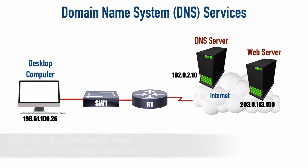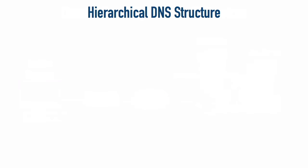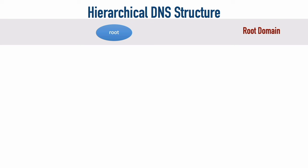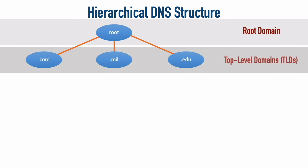The worldwide DNS structure is hierarchical. We start at the root. There is a root domain, and there are roughly 12 different companies around the world that handle pointing us to DNS servers that know how to get us to .com addresses, .mil addresses, and so on. These are just a few examples of top-level domains, or TLDs. Other countries may use a two-letter abbreviation for their country — for example, the United Kingdom might use .uk as its top-level domain.